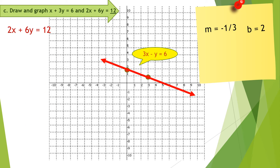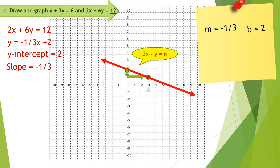The second equation is 2x plus 6y equals 12. The slope-intercept form is y equals negative one-third x plus 2. The y-intercept is 2, so let us plot 2. The slope is negative one-third, so the change in y is negative 1 and the change in x is positive 3. We connect the two points and get the graph of 2x plus 6y equals 12.